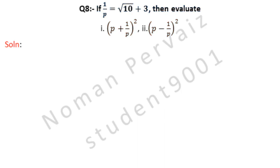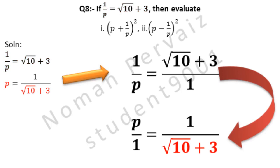As we are given the value of 1 over P, which is √10 plus 3. Since parts 1 and 2 contain both P and 1/P, we first need to find the value of P. P is equal to 1 over (√10 plus 3), because we have inverted the above value. When 1/P is inverted it becomes P, and √10 plus 3 inverted becomes 1 over (√10 plus 3).